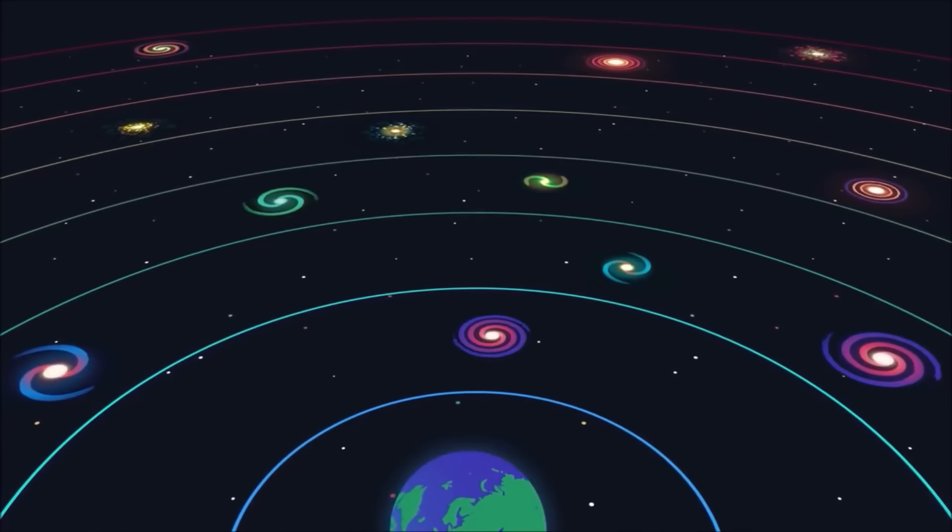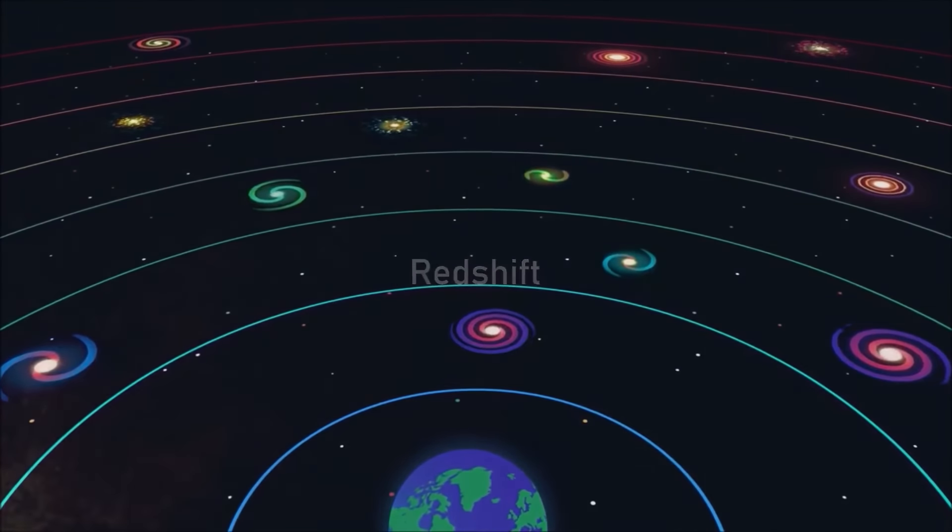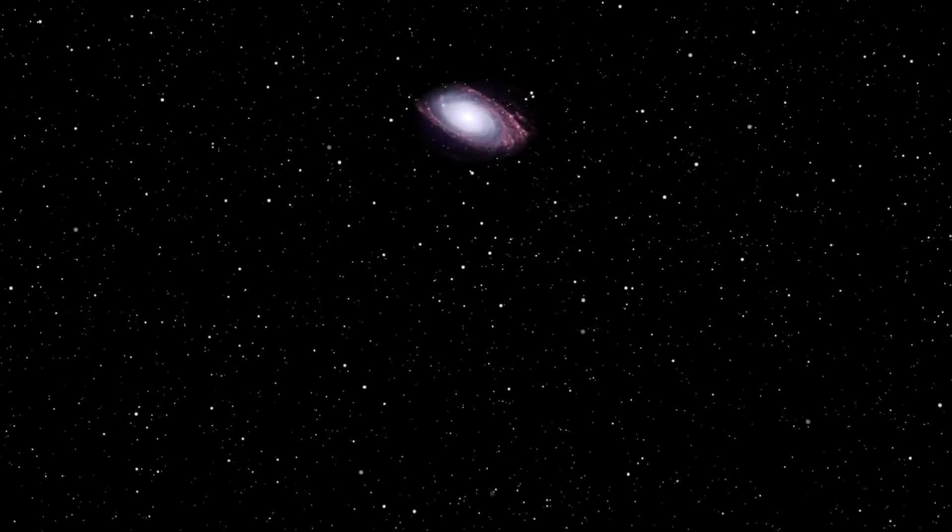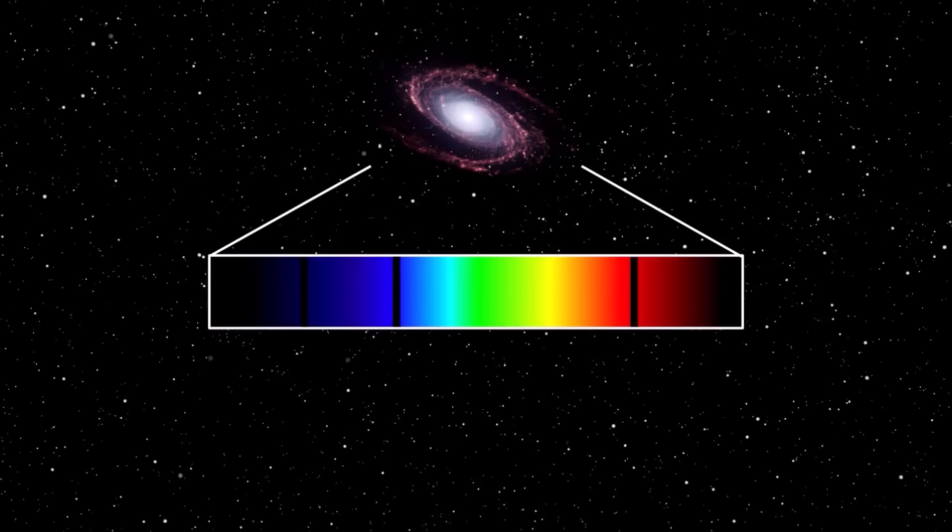Evidence of the universe's expansion is observable everywhere, thanks to the phenomenon known as redshift. Redshift occurs when electromagnetic radiation, including visible light, experiences an increase in wavelength. This stretching of the wave leads to a reduction in wave frequency and photon energy. In the case of visible light and analyzing a galaxy's spectral emissions, this results in the absorption lines of specific elements shifting toward the red end of the spectrum, causing visible light to appear red.